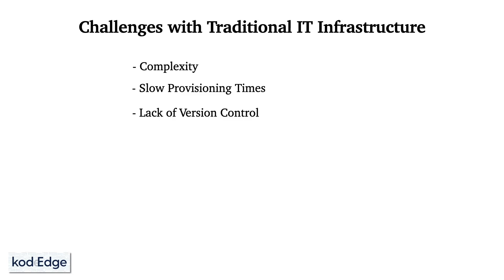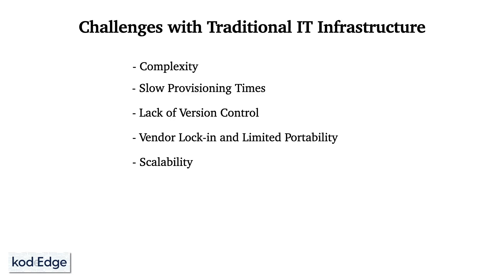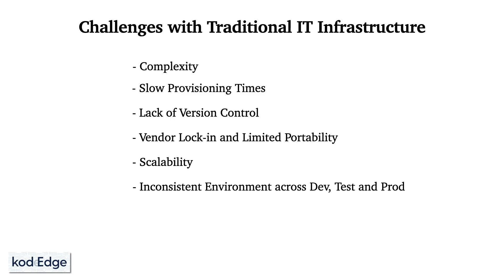Next is lack of version control. Changes made directly to the infrastructure are not tracked or versioned, which leads to potential errors or difficulties in reproducing environments. Next is vendor lock-in and limited portability — using proprietary or cloud-specific solutions can result in vendor lock-in, limited flexibility and portability across different environments or cloud providers. Next is scalability — scaling infrastructure manually can be challenging, especially in dynamic or rapidly changing environments, leading to inefficiencies and resource under-utilization. And last is inconsistent environments across development, test, and production. Differences in configuration between dev, test, and production environments can lead to deployment issues and performance discrepancies.